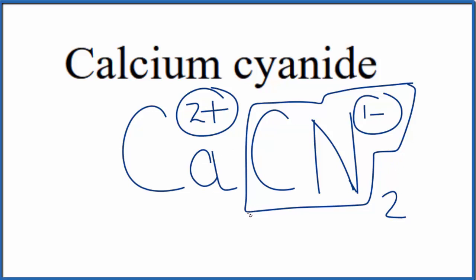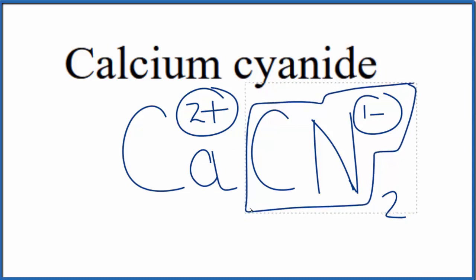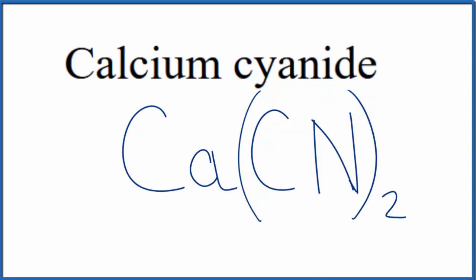We need to put parentheses around the cyanide ion, though, since we have 2 of them. So this is the formula for calcium cyanide: Ca(CN)₂, and that 2 means we have 2 of these cyanide ions. This is Dr. B, and thanks for watchin'.